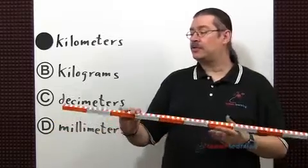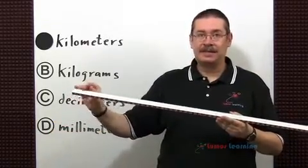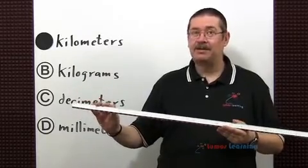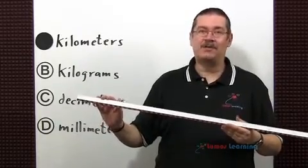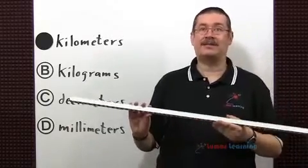If you divide the meter into 1,000 equal individual little pieces, each of these tick marks is 1 millimeter, which is a very small unit of measurement of length, choice D. Not good for measuring the height of a mountain.